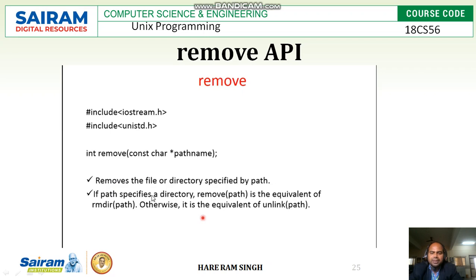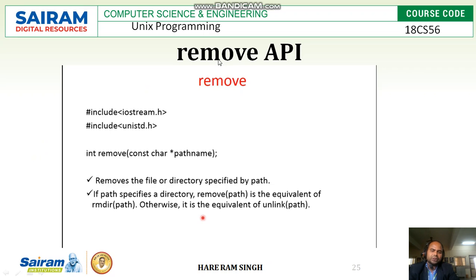If the path specifies a directory, remove(path) is equivalent to rmdir(path), which removes the directory. Otherwise, it is equivalent to unlink(path). So if the path name holds the address of a directory, the whole directory can be removed using this call.